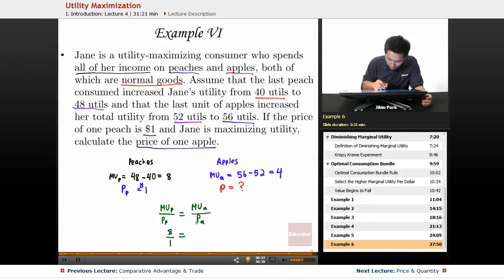So it's a simple matter of cross multiplying. You have 8P_a equals 4. Divide by 8 on both sides.